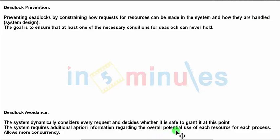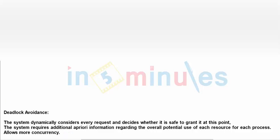For deadlock avoidance, we take additional information regarding the overall requests, processes, and resources, and then decide — this is more about concurrency and how many processes and resources would together access the system. The difference is simple: prevention uses design rules, while avoidance finds a safe condition from the given and extra data about the current scenario.